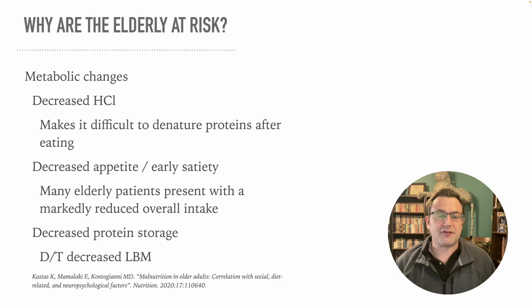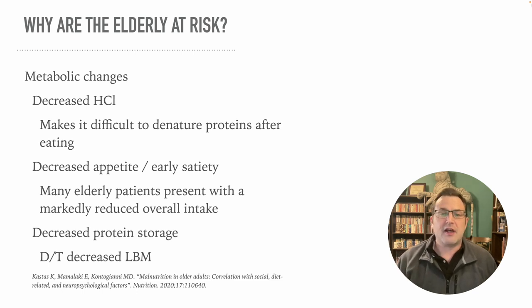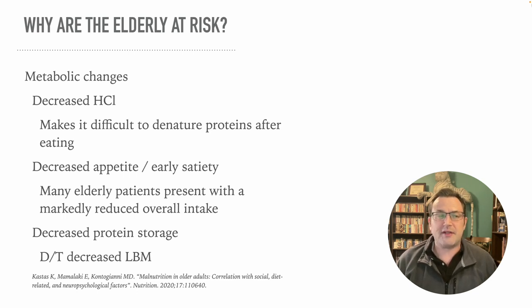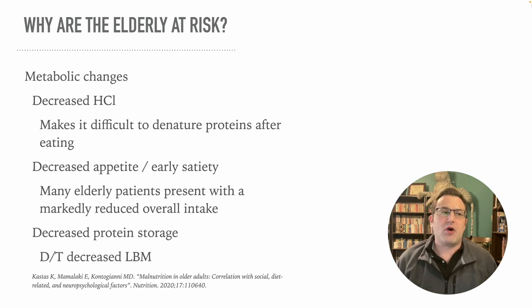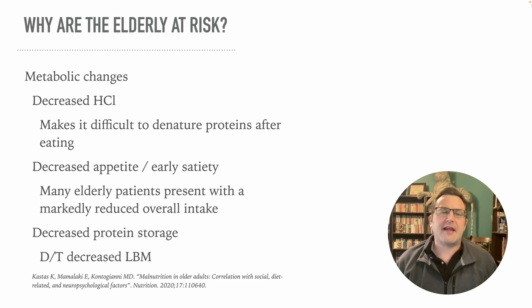There are also metabolic changes. Gastric atrophy causes a decrease in hydrochloric acid, which makes it difficult to denature proteins that have been eaten. If proteins aren't being denatured, they can't be absorbed. Elders also have a decrease in appetite and early satiety, so overall they have a lower intake — and they tend to have a lower intake of protein specifically.